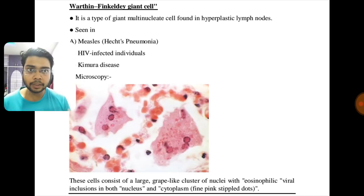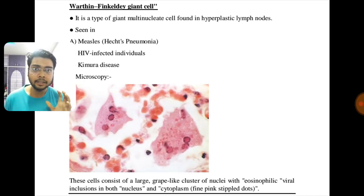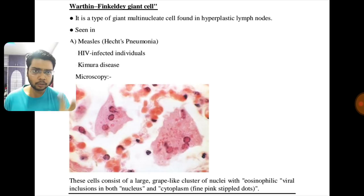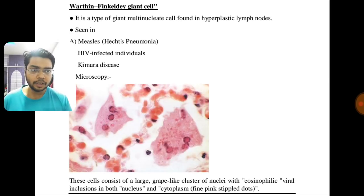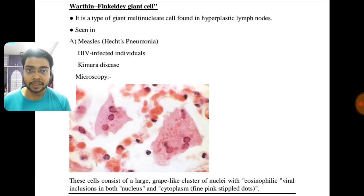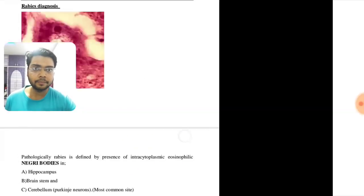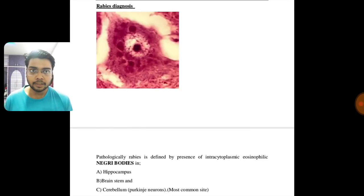These are Warthin-Finkeldey giant cells, present in measles, HIV-infected individuals, and Kimura disease. They look like a grape-like cluster of nuclei with eosinophilic viral inclusions in both the nuclei and the cytoplasm. They stain as fine pink stippled dots, as you can see in the picture.